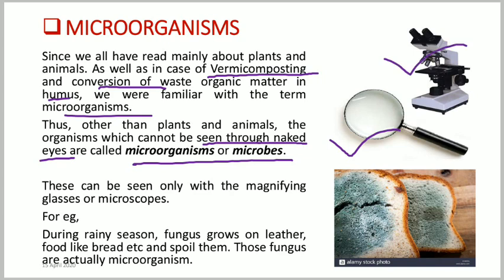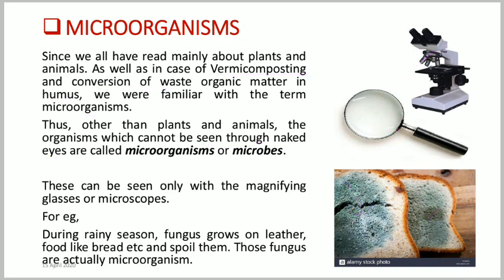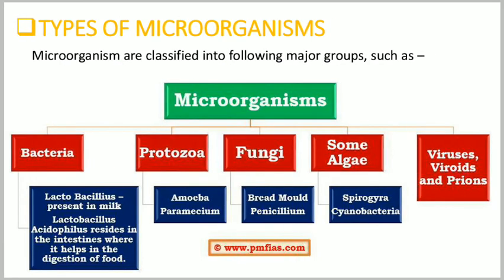Here we have a picture you might be familiar with — fungus has grown over bread and spoiled it. Fungus is another type of microorganism. There are mainly four types of microorganisms: bacteria, protozoa, fungi, and algae.